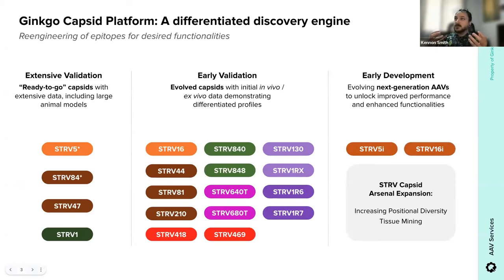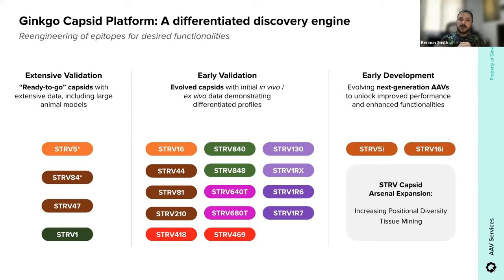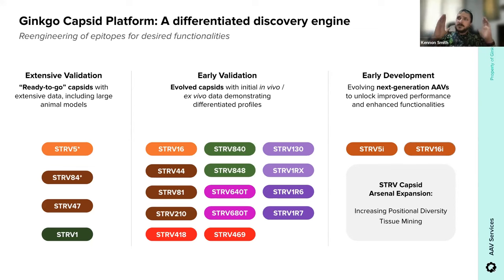The capsids fall into three major buckets. On the left: capsids that have been extensively validated in large animal models including NHPs and pigs — ready to go for partners to match to their desired indication. The second bucket contains capsids with early validation data that demonstrate differentiated profiles from their parental backgrounds, including capsids with mouse data ready for biodistribution testing in NHPs, or capsids developed for ex vivo applications ready to be redeployed in vitro or in vivo. The variants in these two buckets exhibit wide diversity in tissue tropism — CNS, muscle, liver, heart, and even T cells.